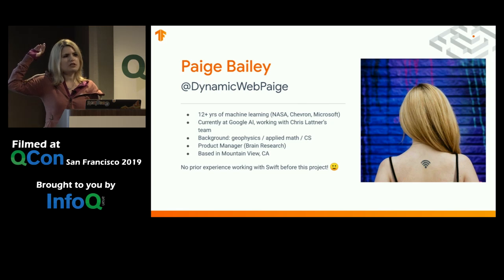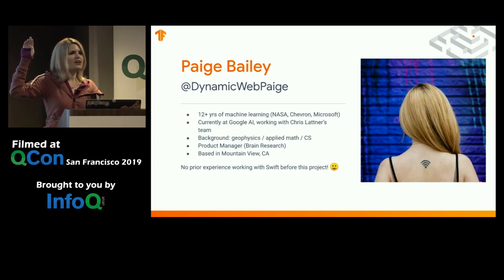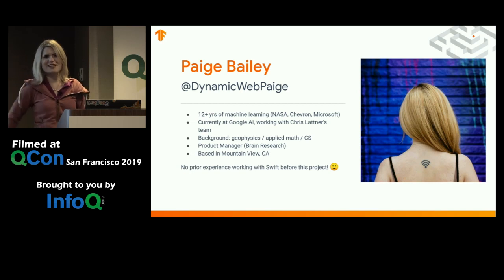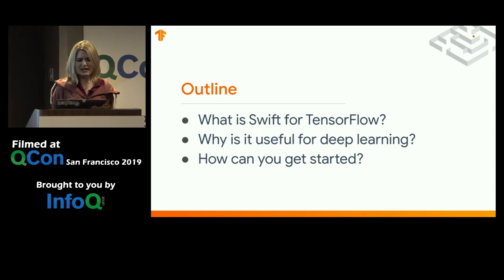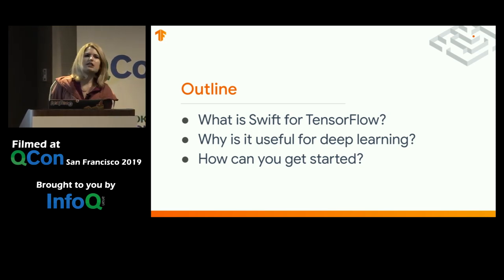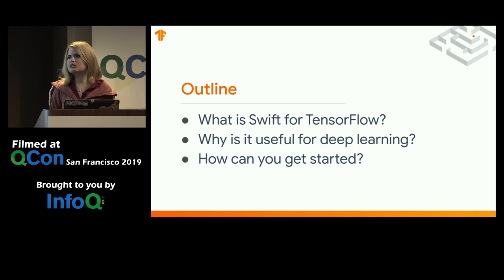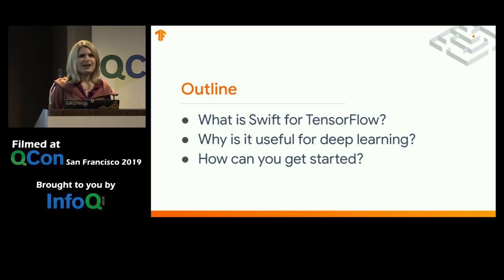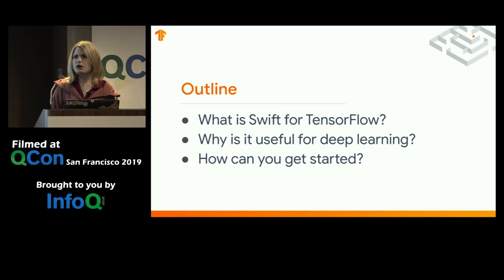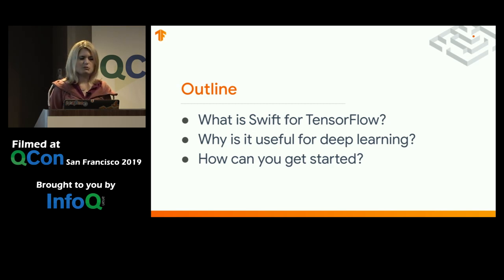How many of you are familiar with Swift? And how many of you work primarily in Python? With that, I'll get started. An outline for today: we're going to talk about what Swift for TensorFlow is and what it is not. It is not just another language binding for TensorFlow — it is actually a reimagining of the complete framework, giving us a number of benefits particularly in production settings and in terms of performance. We're also going to talk about why Swift is useful for deep learning and give you resources to get started, especially in a machine learning context.